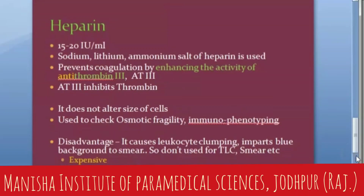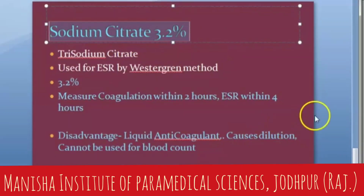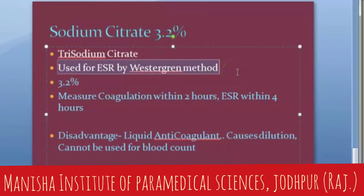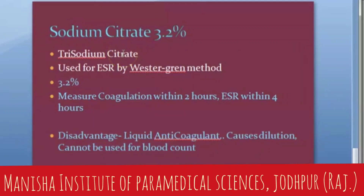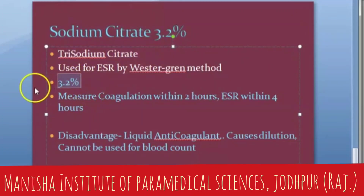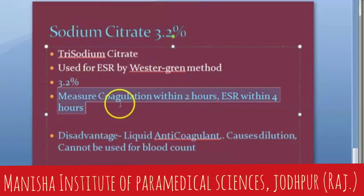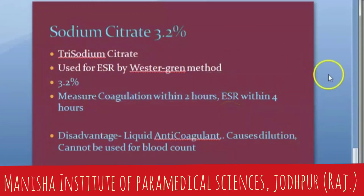Now moving on to sodium citrate — it corresponds to the light blue vacutainer. It is used for ESR by the Westergren method. It is a liquid anticoagulant, which is a disadvantage because it causes dilution, so don't use it for blood cell counting. For ESR by the Westergren method (not the Wintrobe method), sodium citrate is used. It is actually trisodium citrate at 3.2 percent. Coagulation must be measured within two hours, and ESR within four hours.